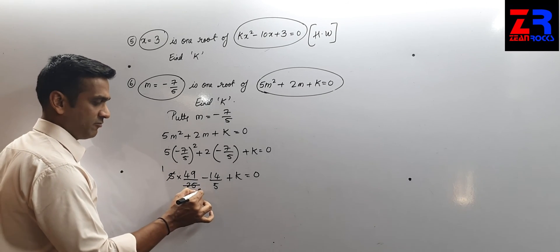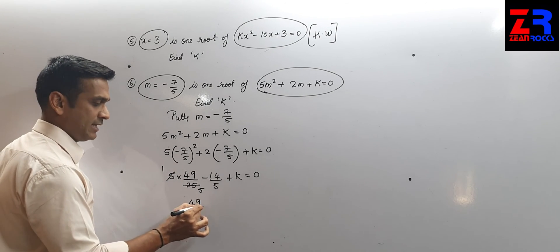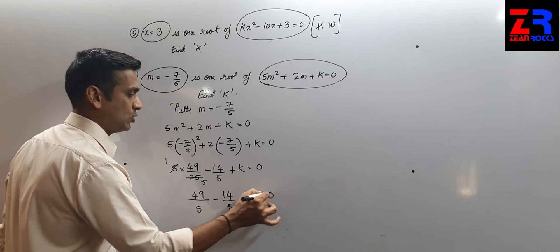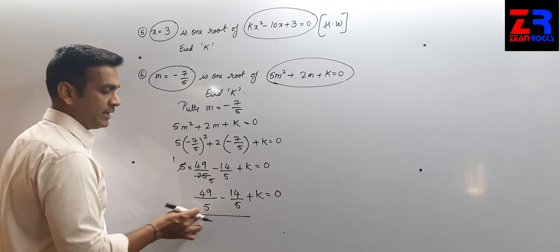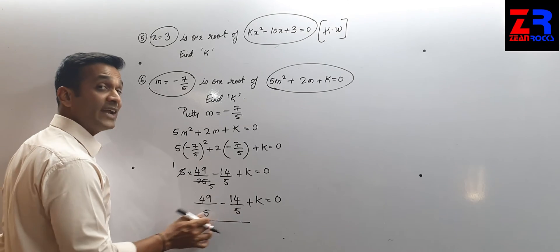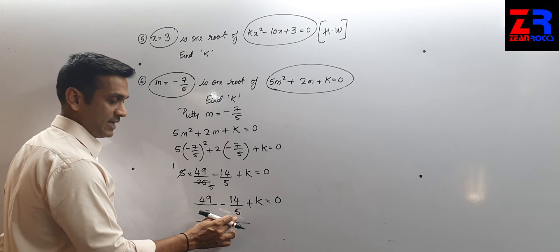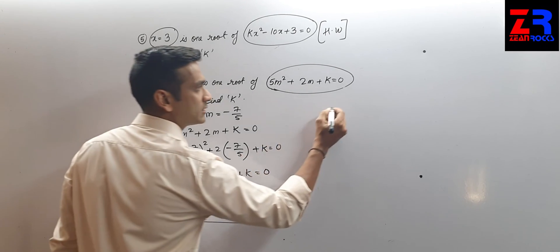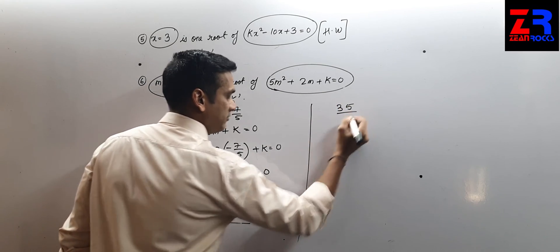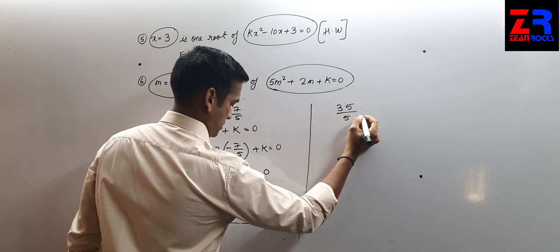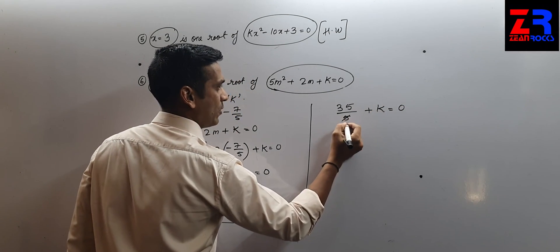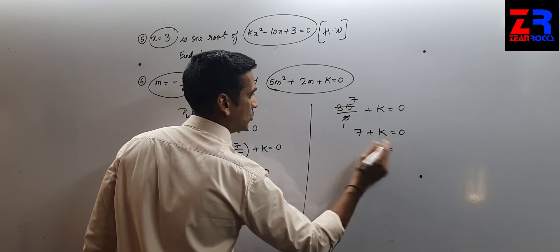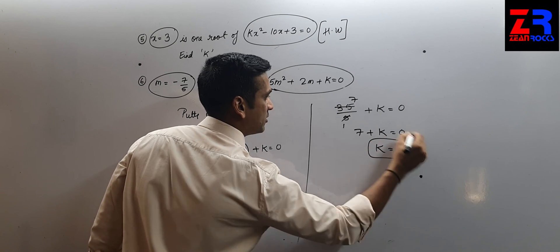The denominators are the same, so subtracting the numerators: 49 minus 14 = 35. So 35/5 plus k = 0, giving 7 + k = 0. Therefore k = minus 7.